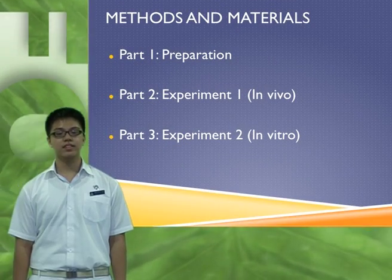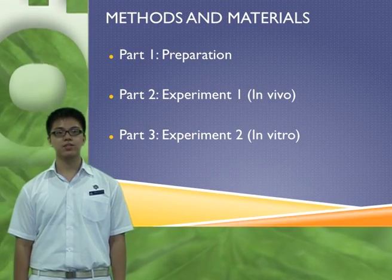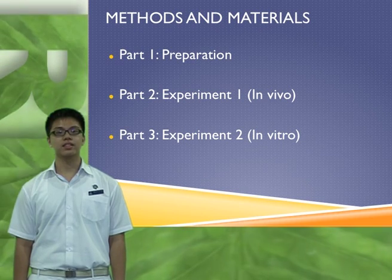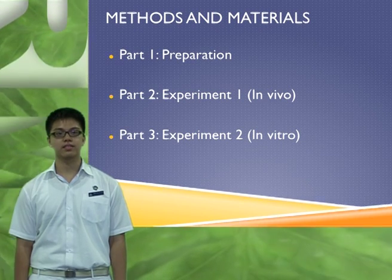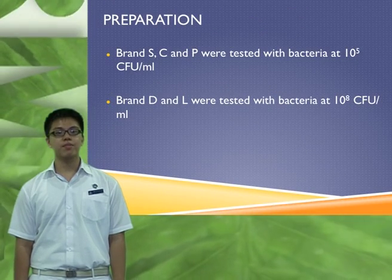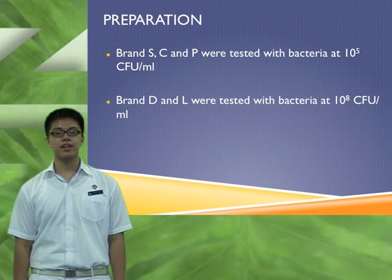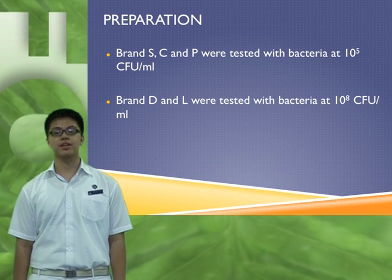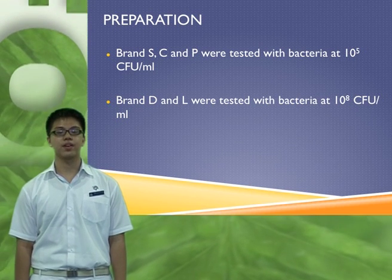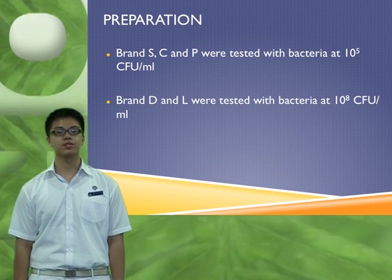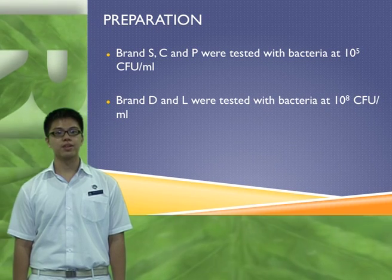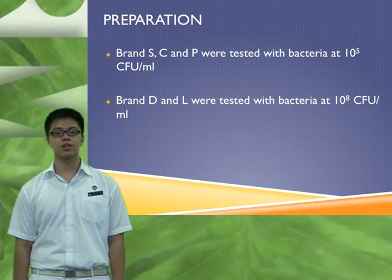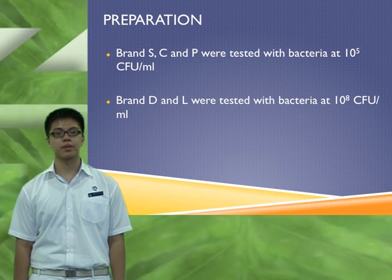We have divided the methods and materials into three parts: preparation, the in vivo test, and the in vitro test. For the preparation, brands S, C, and P were tested with bacteria at 10 to the power of 5 colony-forming units per ml. Brand L and brand D were tested with bacteria at 10 to the power of 8 colony-forming units per ml.